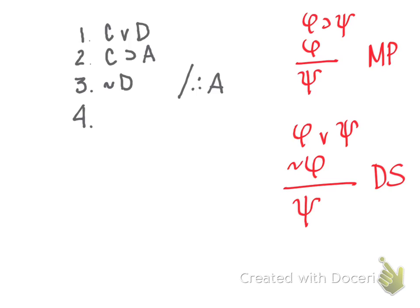From the premises, I know that since I have a disjunction and the negation of one disjunct, I can infer that other disjunct. So I'll put C on a line, and I'll cite the two lines I'm looking at, lines one and three, and the rule I'm using, disjunctive syllogism.